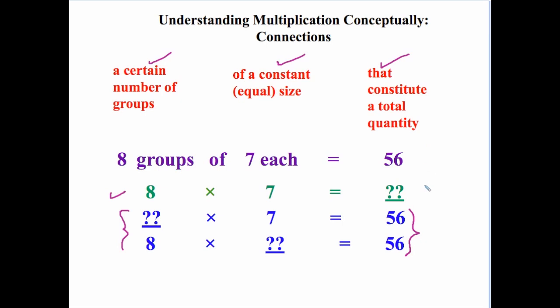Really, the only difference between multiplication and division is what you know and what you don't know. In the case of multiplication, you know the size of the groups and the number of groups. You're looking for the total. And in division, you know the total and you're looking for either the size of the groups or the number of groups. What makes multiplication and division the same is that it involves the same three components, and the only thing that makes them different is what you know and what you're looking for.